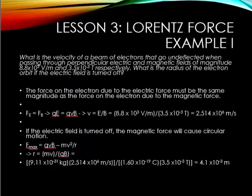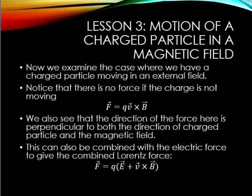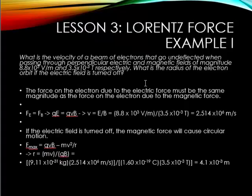So now let's look at an example of force on a charged particle. This is also sometimes called the Lorentz force. What is the velocity of a beam of electrons that go undeflected when passing through perpendicular electric and magnetic fields of magnitudes, 8.8 times 10 to the 3 volts per meter for the electric field, and 3.5 times 10 to the minus 3 tesla for the magnetic field, respectively.